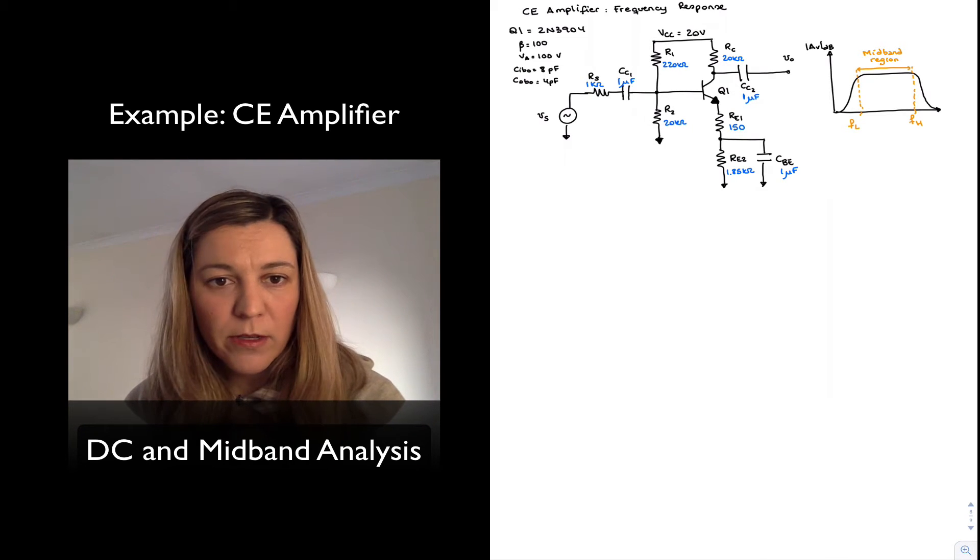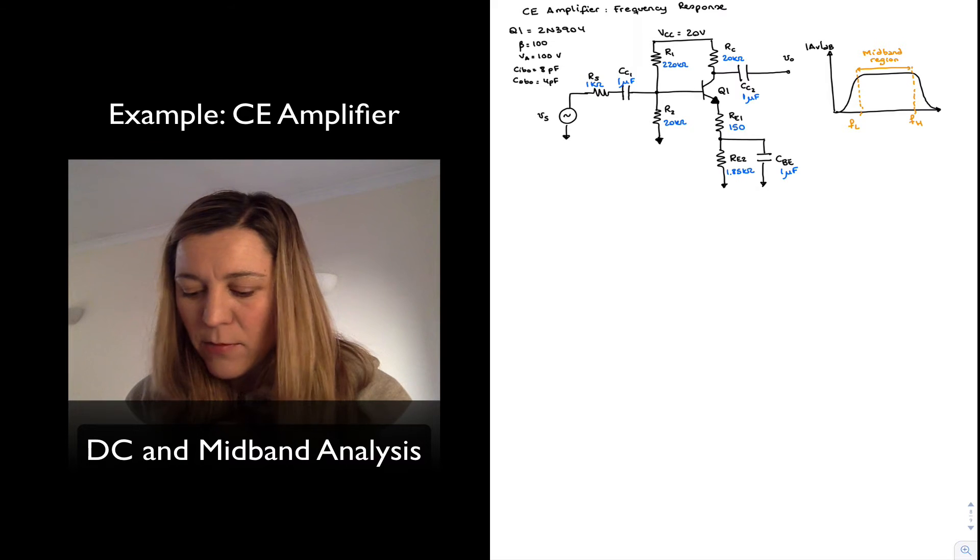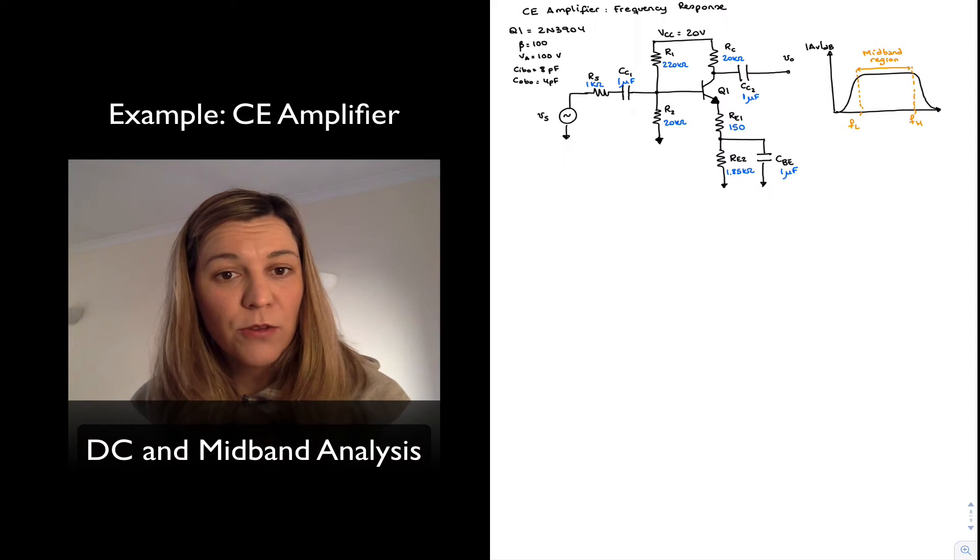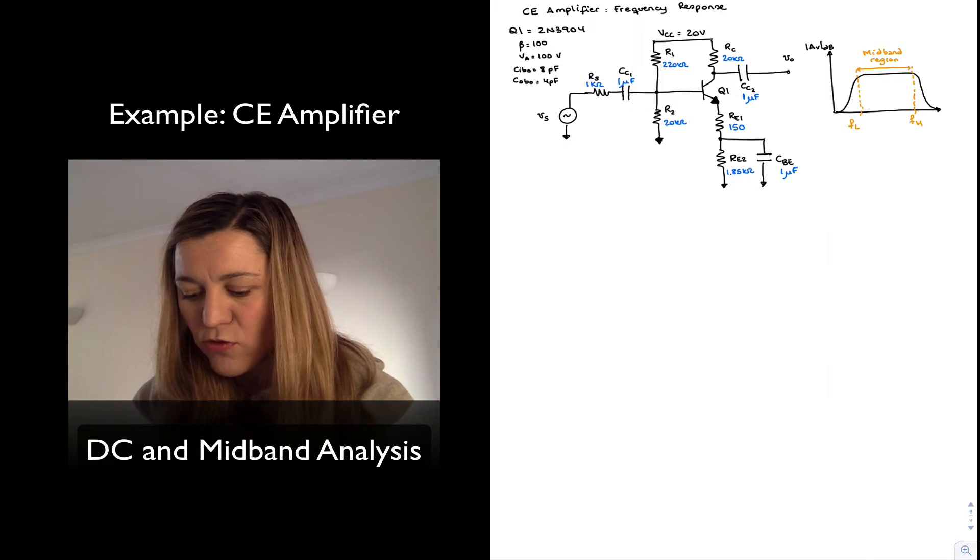Now notice that in the case of beta, I'm not picking an extreme value out of the range that comes in the datasheet. I'm just going for more of a mid-range value.